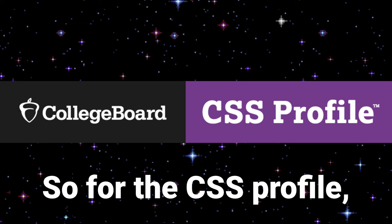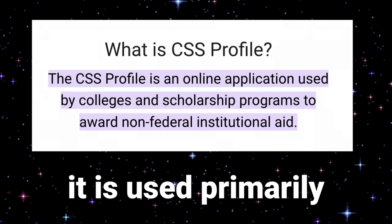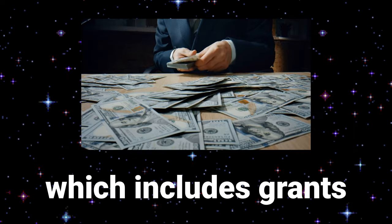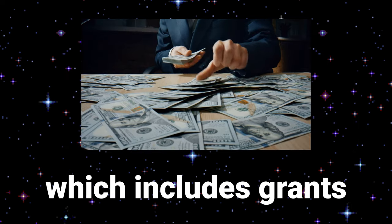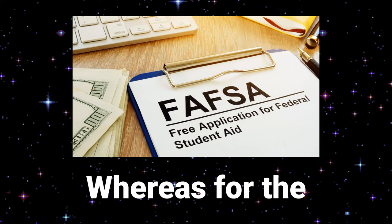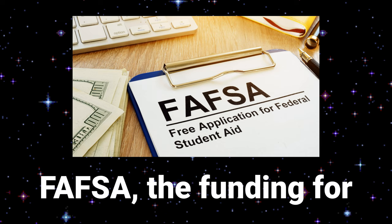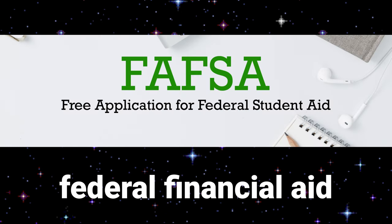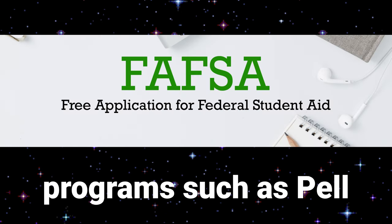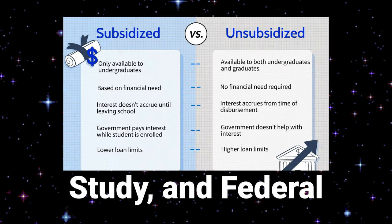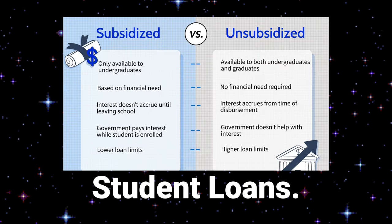The CSS Profile is used primarily for non-federal aid and institutional aid, which includes grants and scholarships from colleges and universities. Whereas the FAFSA is used for federal financial aid programs such as Pell Grants, federal work-study, and federal student loans.